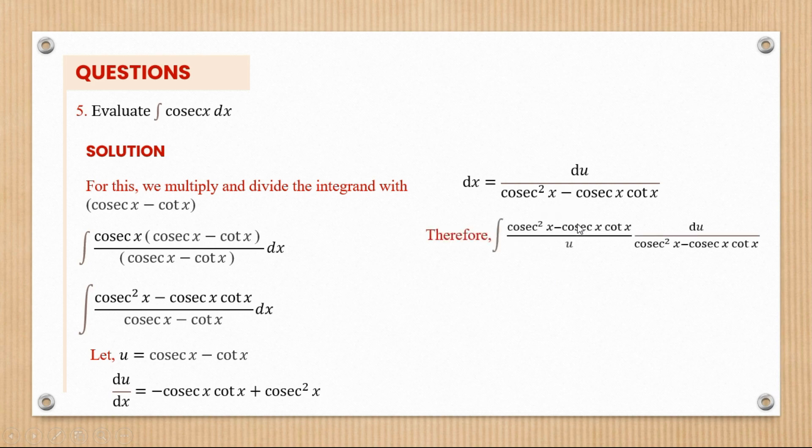When we put that back in, we can see that this and this will cancel, and we'll be left with the integral of 1 over u du. And ln of u, so our answer shall be ln u plus c.